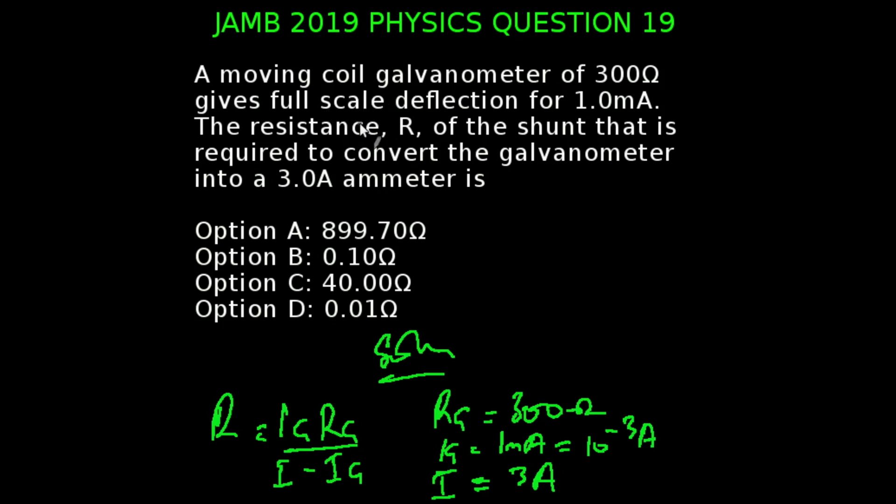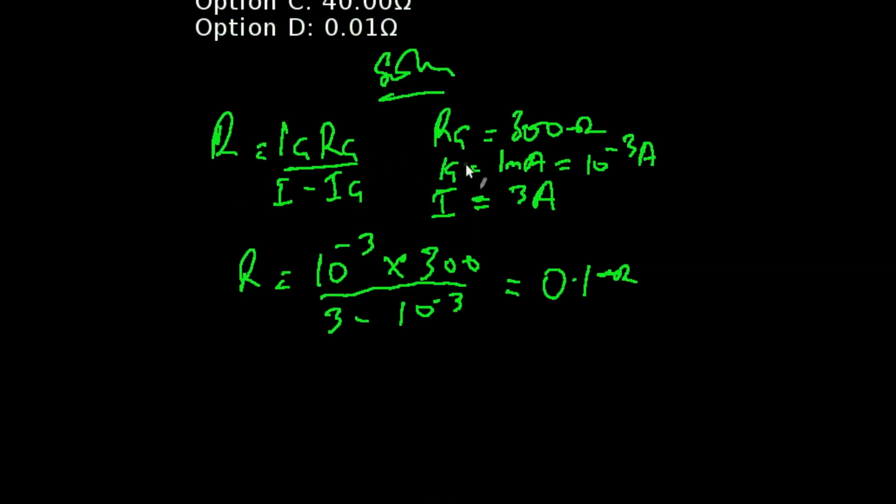You are looking at question 19 of the JAMB 2019 physics examination. A moving coil galvanometer of 300 ohms gives full scale deflection for 1.0 milliampere. The resistance R of the shunt that is required to convert the galvanometer into a 3.0 ampere ammeter is